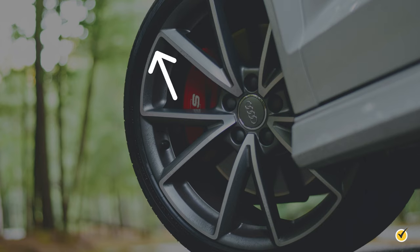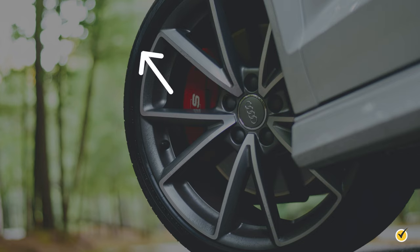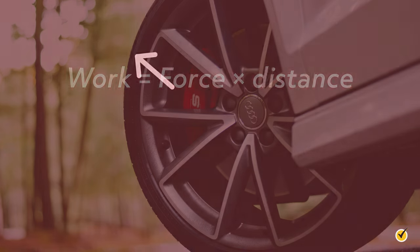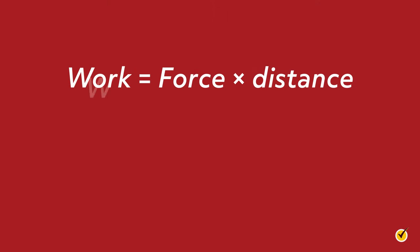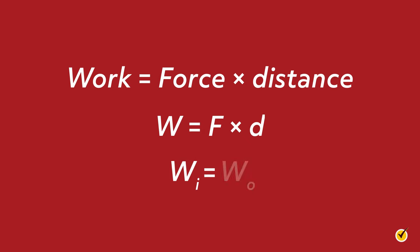As such, the point on the axle will cover less distance than the point on the wheel. Now recall that work is equal to the force applied to something multiplied by the distance it travels, so W equals F times D.